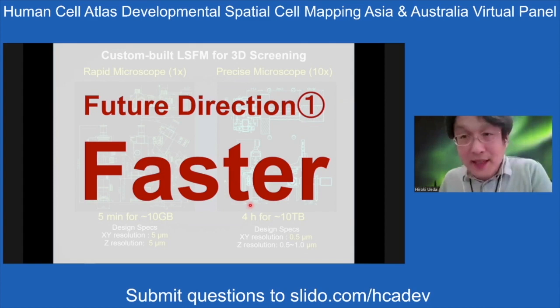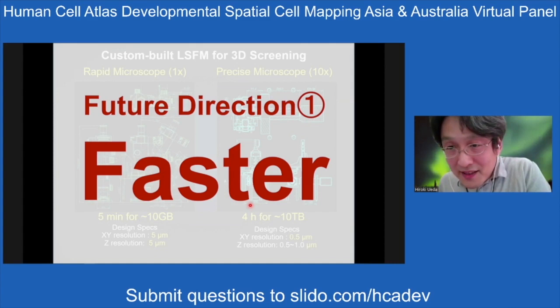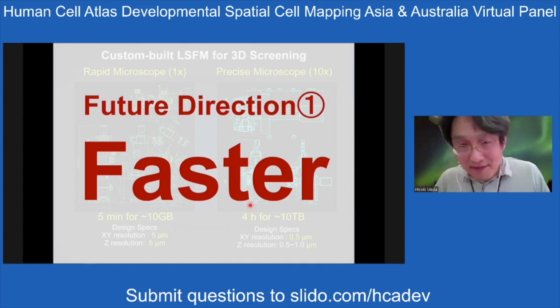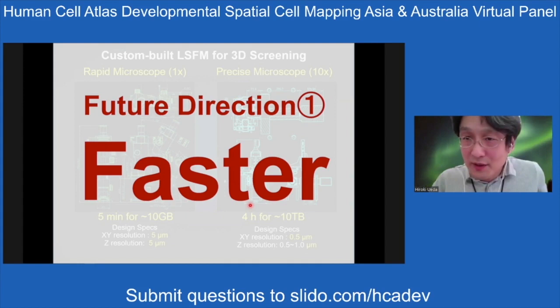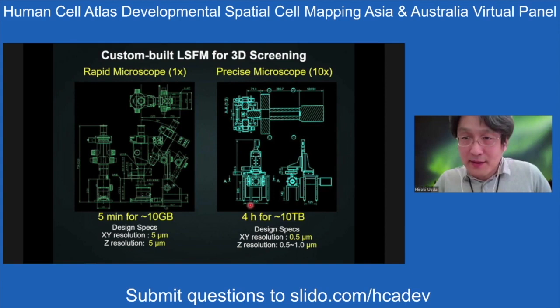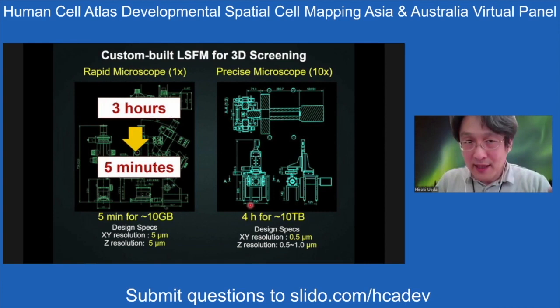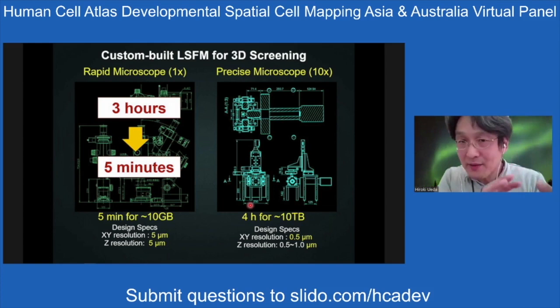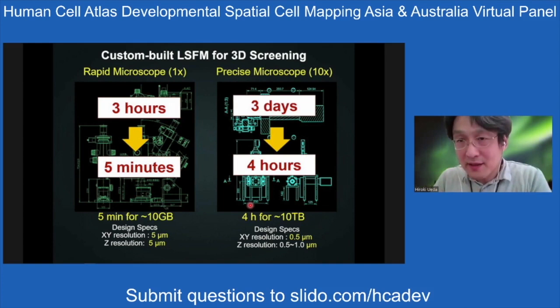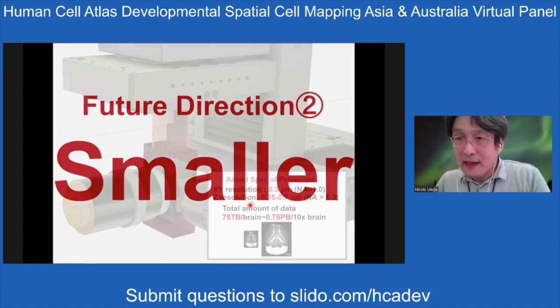There are three future directions. The first is going faster — previously light sheet microscopy took three hours for low resolution data, but this can be brought down to five minutes. High resolution data took three days but can be reduced to four hours using high-speed light sheet microscopy. The second direction is going smaller — currently XY resolution is quite high, but axial resolution is not as good. By using axial sweep technique, we can achieve higher resolution, and this can be combined with expansion microscopy. We are planning to perform whole brain synapse analysis in adult mouse brain — which gives rise to petabyte data, so we call it the 'petascope project.'